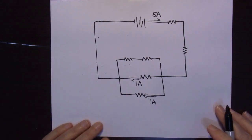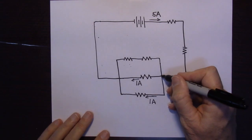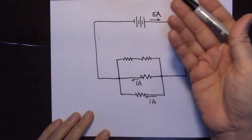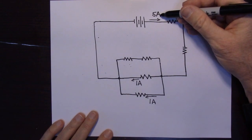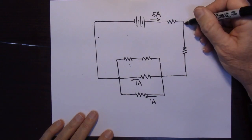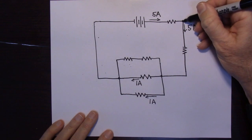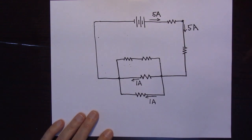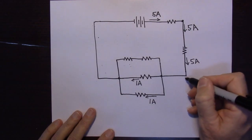Moving along to one more example. Here we have another circuit — see if you can count how many junctions there are. I'm getting two junctions: this one and this one. Let's say we have a battery and we know there's five amps coming out. This also has to be five amps right here because there are no junctions to split it up. So this has to be five amps, and so does this.